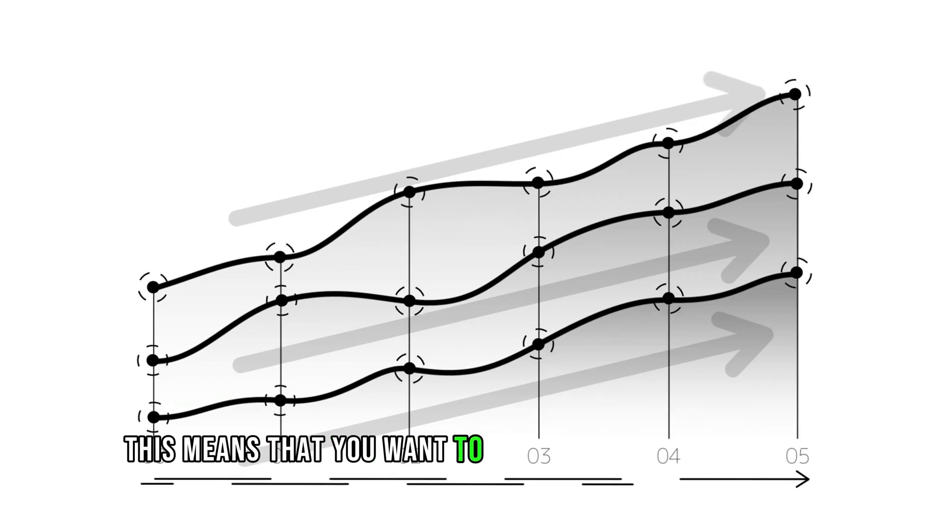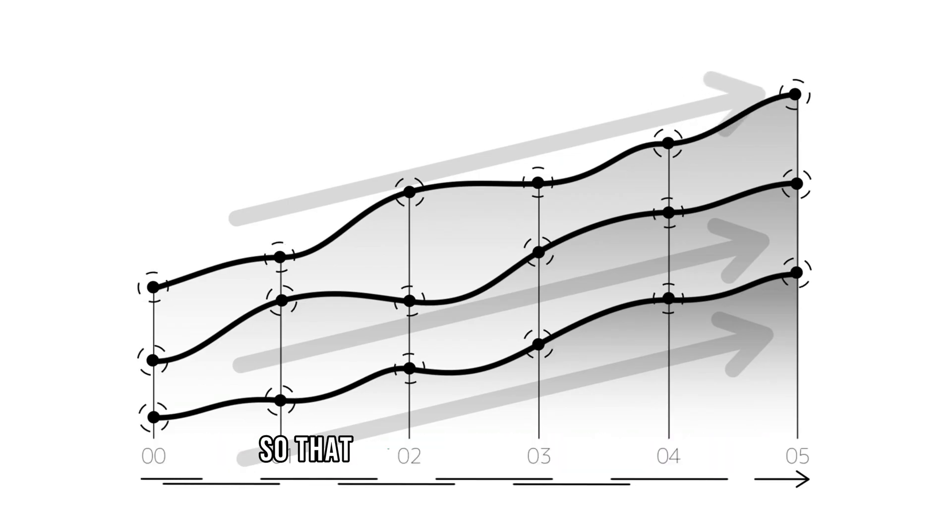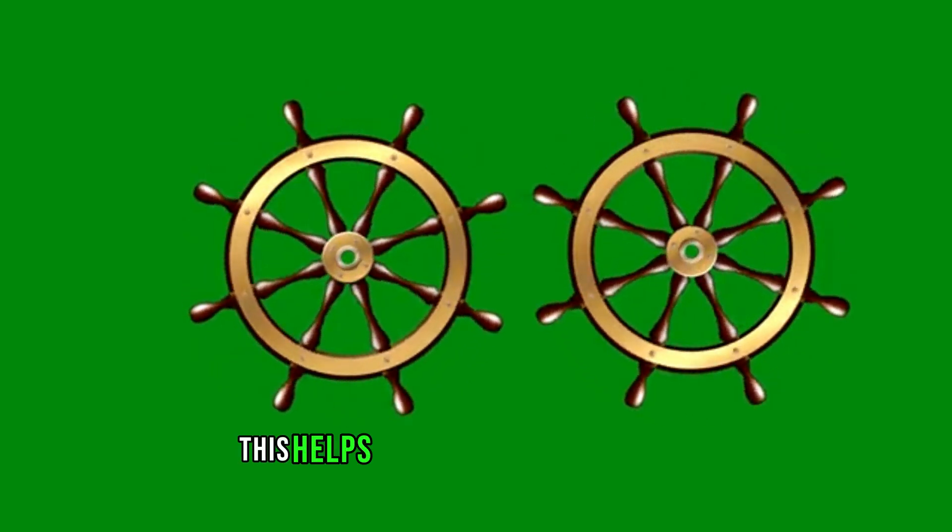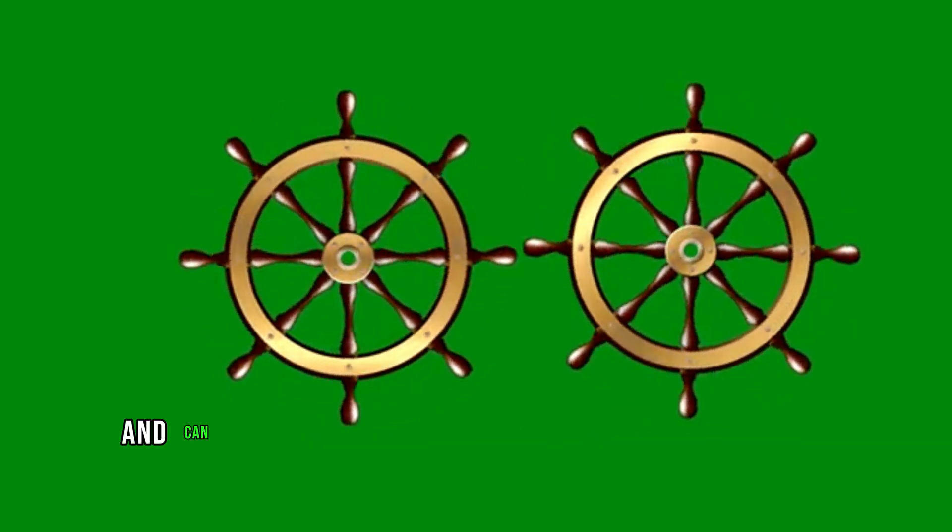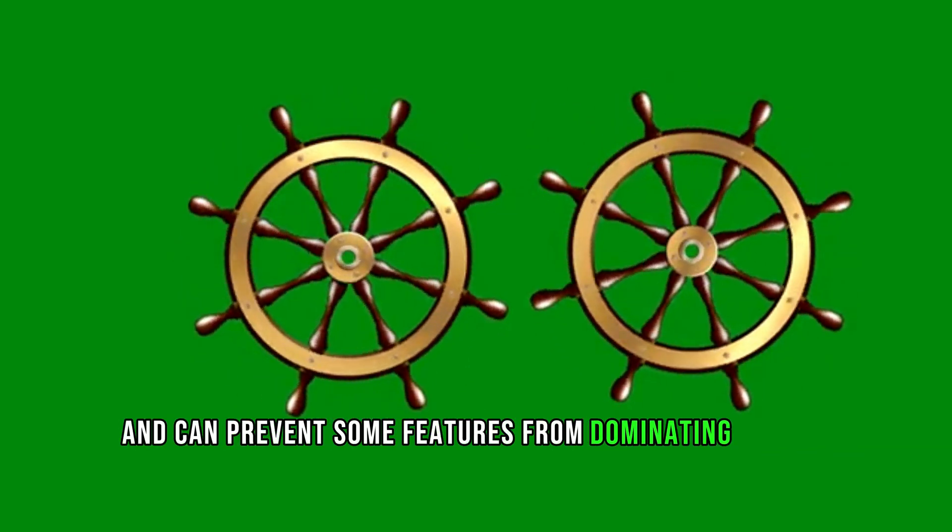This means that you want to scale all of your features so that they're in a similar range. This helps the model converge faster and can prevent some features from dominating others during training.